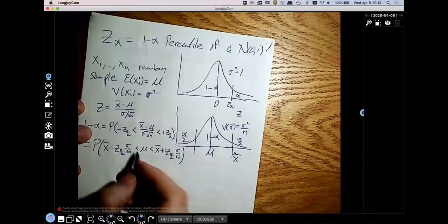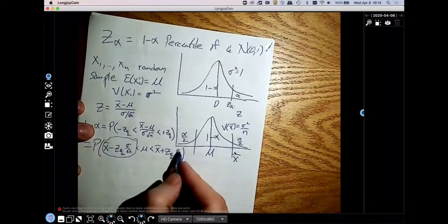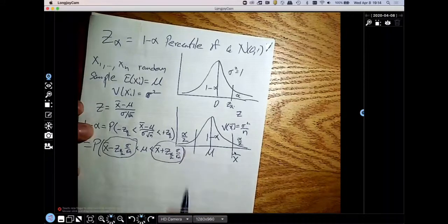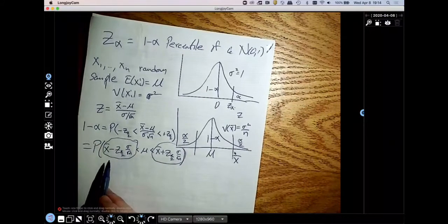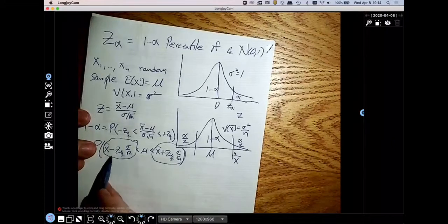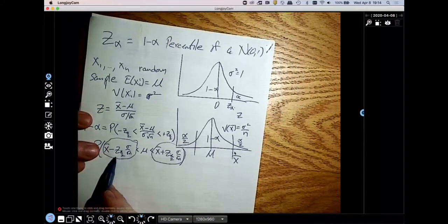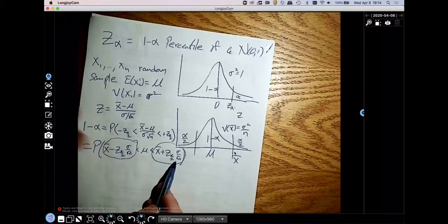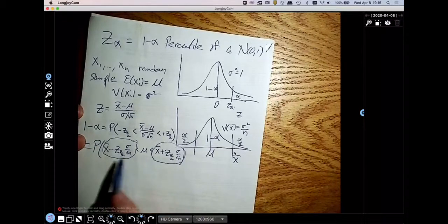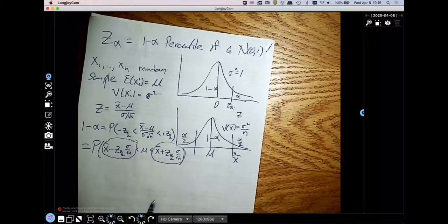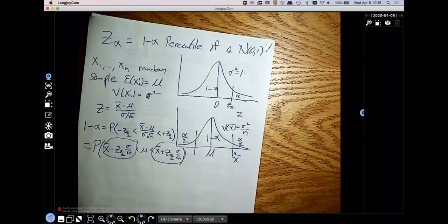So these are the two ends of my confidence interval. If I take the things that I know, X bar, that's my estimator, and go two standard deviations out from that, that gives me a window where I think mu lies with coverage probability 1 minus alpha.